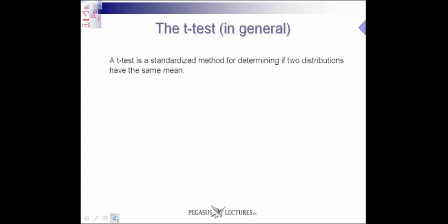In general, the t-test is a standardized method for determining if two distributions have the same mean. What do we mean by two different distributions? Well, we could be measuring data from two different groups of students who went to attend a different school, to see if they have the same IQ, and see if the school has an effect on IQ.